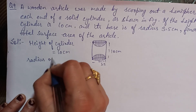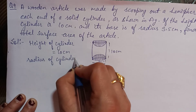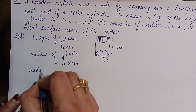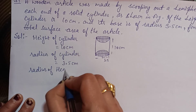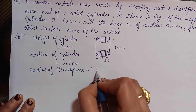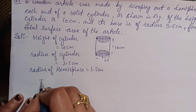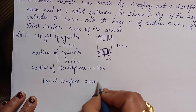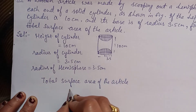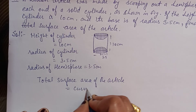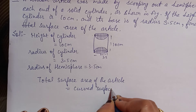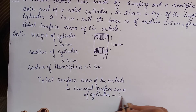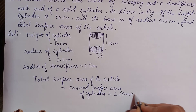The radius of the cylinder is 3.5. You have two hemispheres scooped at the two ends, which will also give inner surface area. Add all to get total surface area. Total surface area of the article = curved surface area of cylinder + 2 × curved surface area of hemisphere.